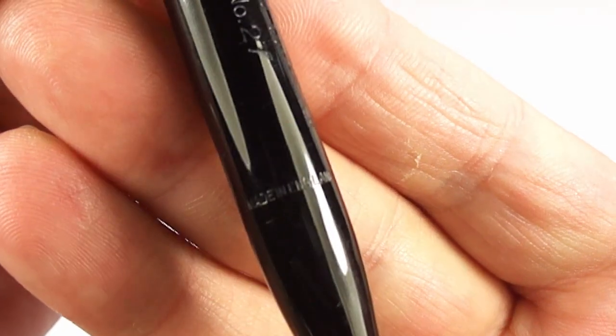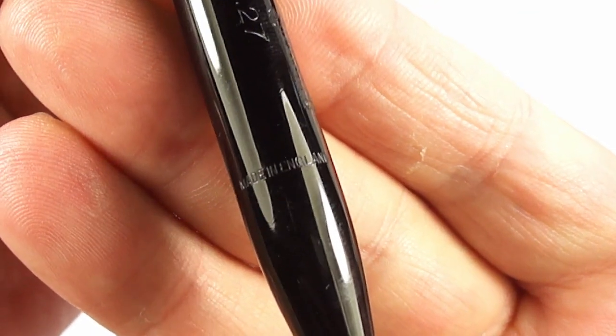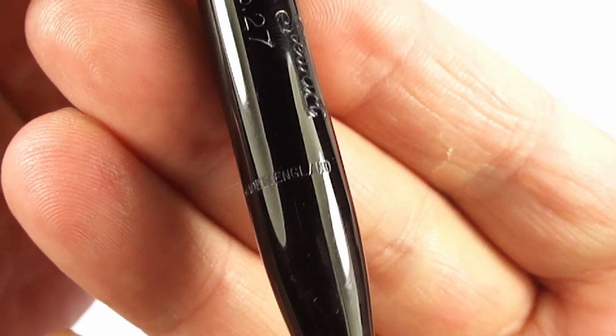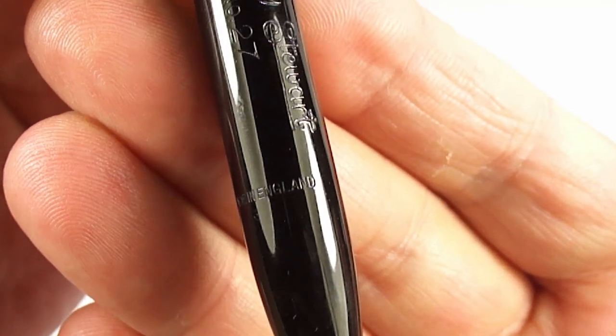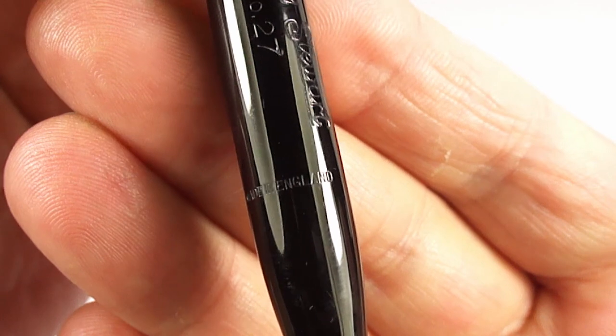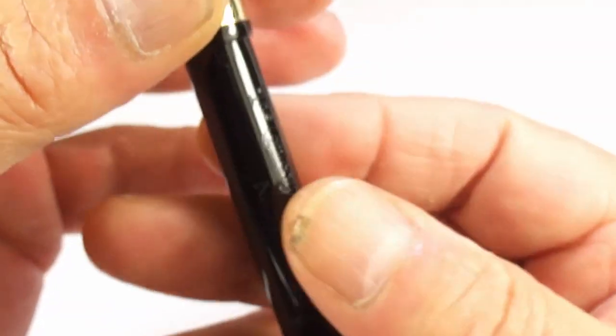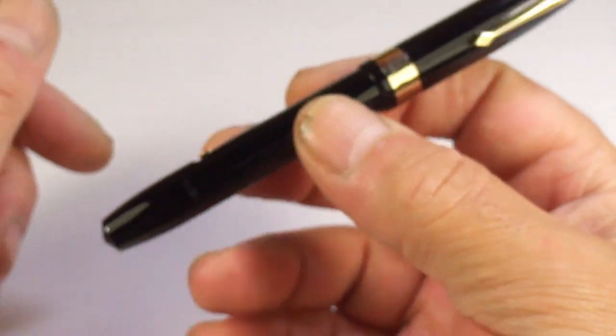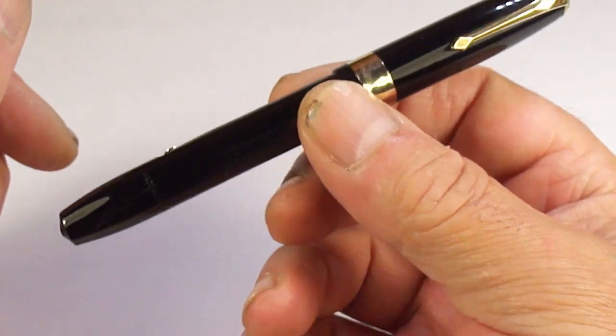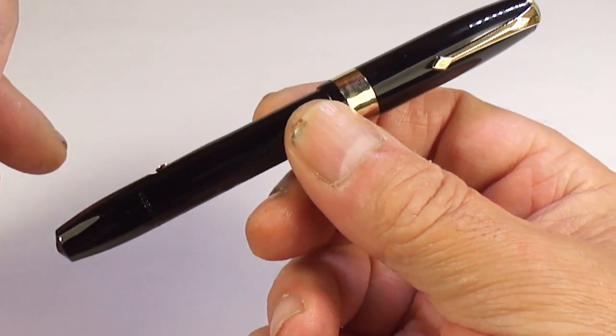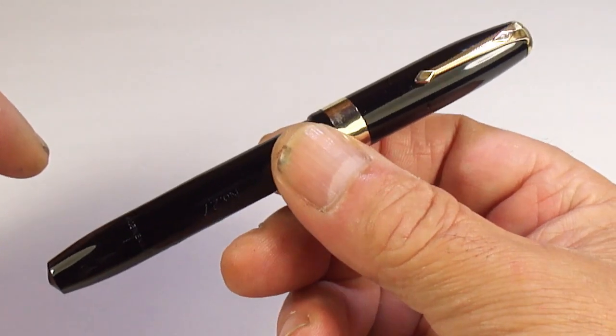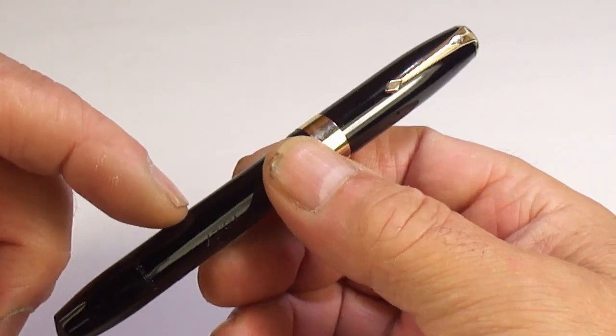This barrel imprint is indicating that this is the earlier version. If we take it down towards the bottom of the barrel, you'll see at the bottom there again, nice and clearly, it says made in England.